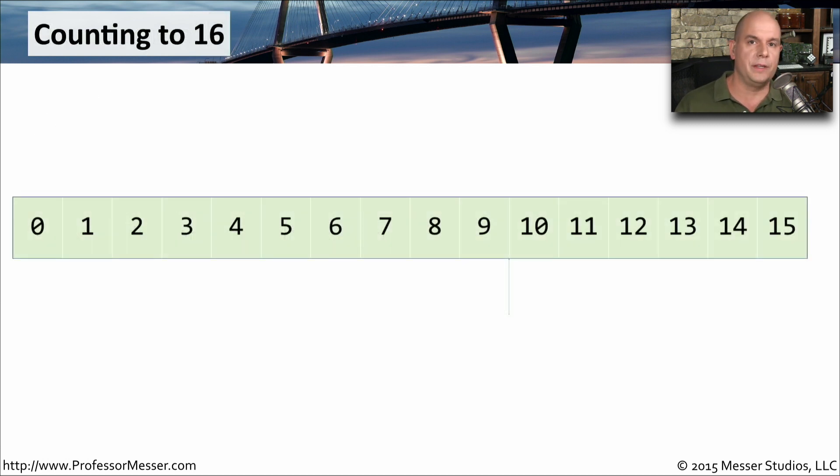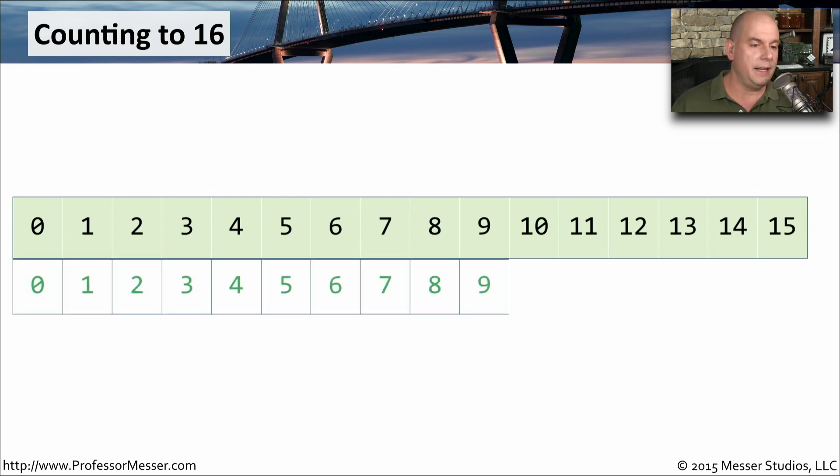In hexadecimal, we represent the numbers 0 through 15 a little bit differently than we do in decimal form. We can write this down by going 0 through 9, but as soon as you get to 10, instead of using that decimal form of 10, we're going to use the letters A, B, C, D, E, and F, all the way up to number 15. So there's our 16 spaces in decimal, 0 through 15, but in hexadecimal, it is 0 through F.